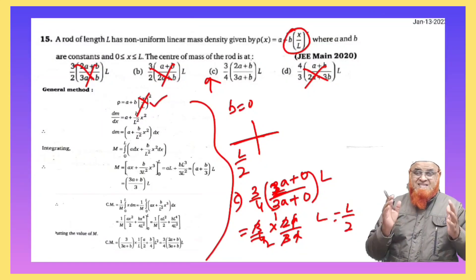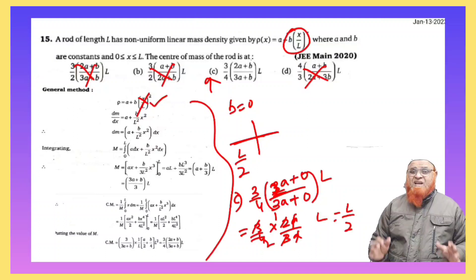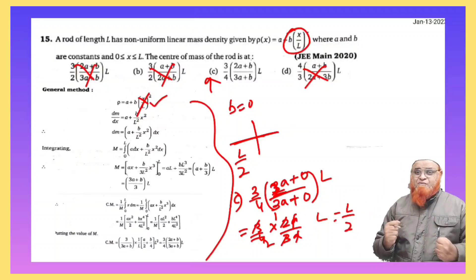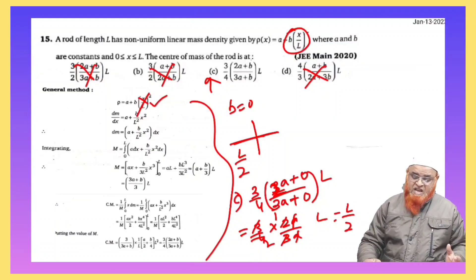you substitute the value of B as 0, you are not going to get L by 2 - you will get some other value. Hope you have enjoyed this fun part of the problem. Thank you very much.